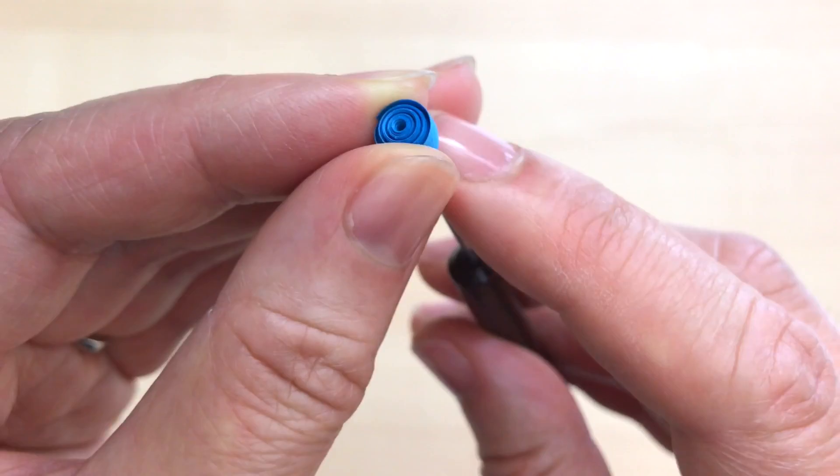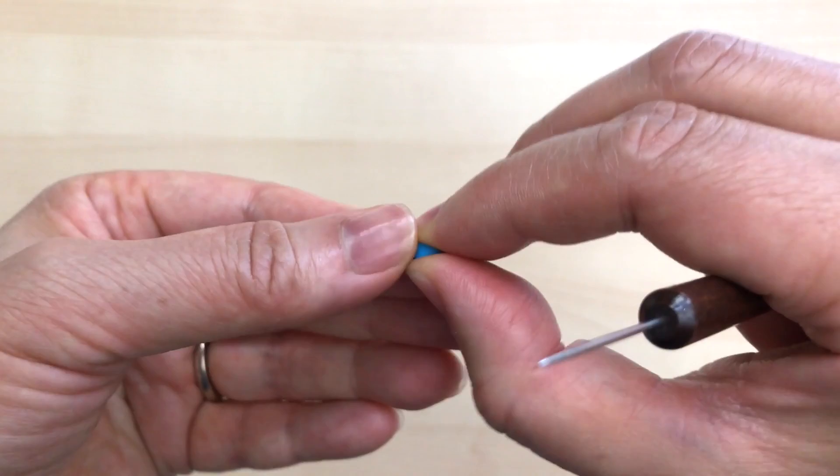As you turn your coil, you can see how these edges are a little bit out of alignment. That's okay, I'm just going to push the coil off and compress that with my fingers and just give it a second. That's going to make it a lot more even.